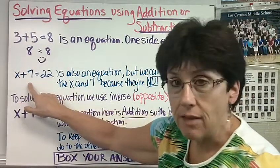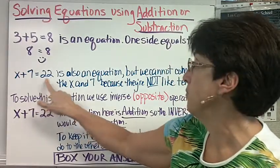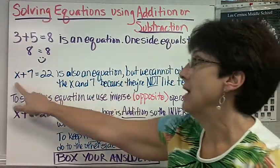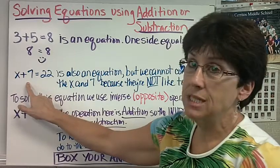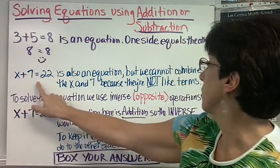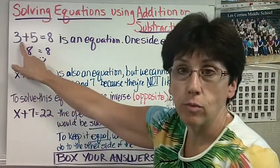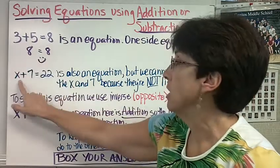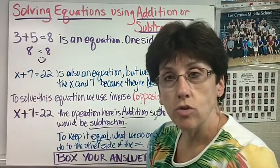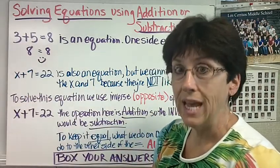x plus 7 equals 22 is also an equation, but we can't combine the x and the 7 because they are not like terms. Here we could combine the 3 and the 5 because they are like terms. Here we can't. So what we're trying to do is solve for what x is.